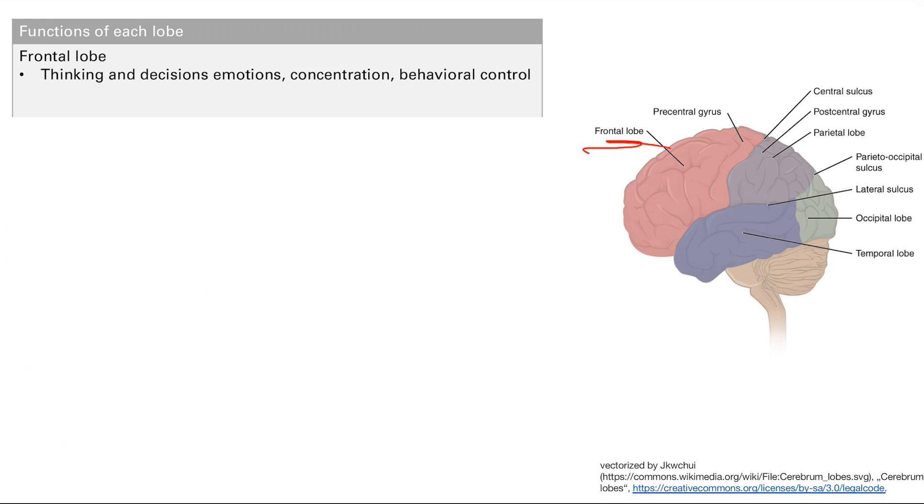Parietal lobe is right here. It's responsible for perception and for language. We talked a little bit about Broca's area—that's in the parietal lobe for production of speech. For perception, there's something called hemi-neglect where if you lose your non-dominant parietal lobe, which is usually your right side, you lose perception of the opposite side of your body. For some reason, you just don't realize there's anything on the left side of your body.